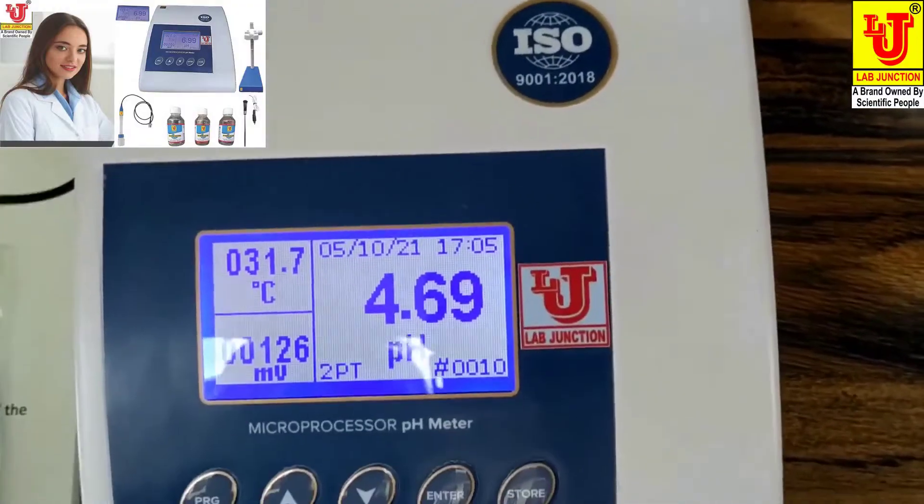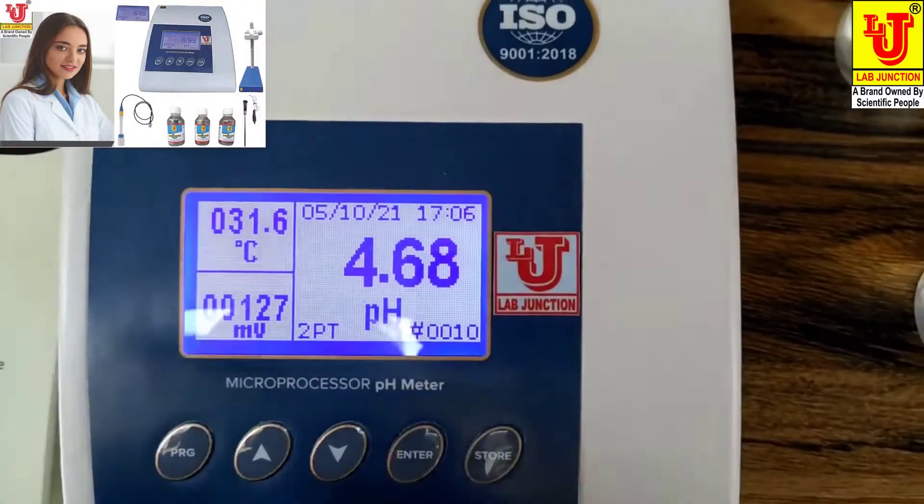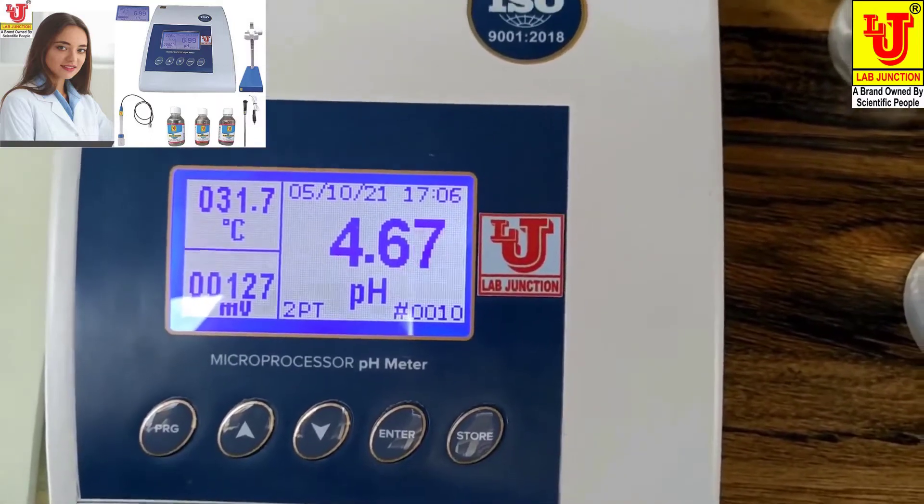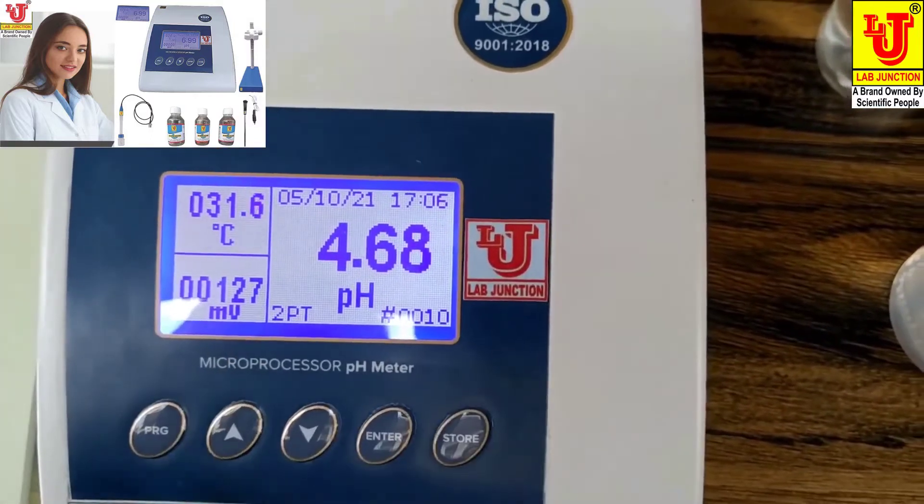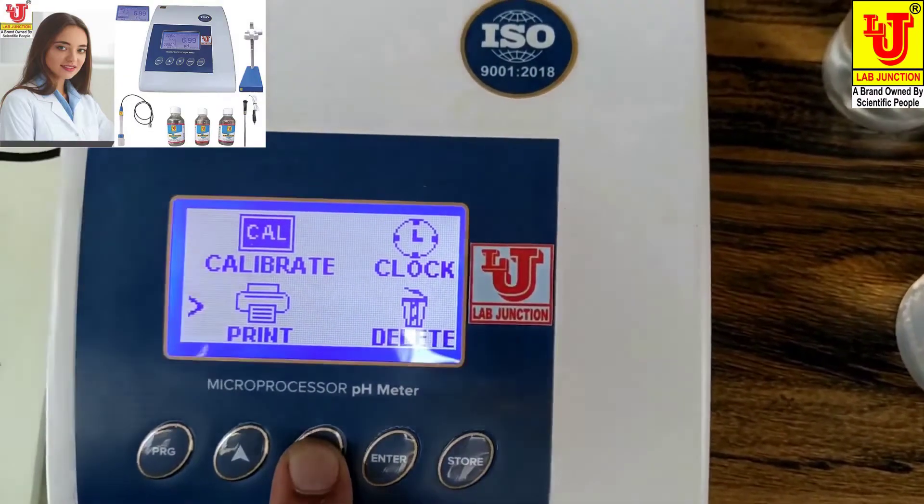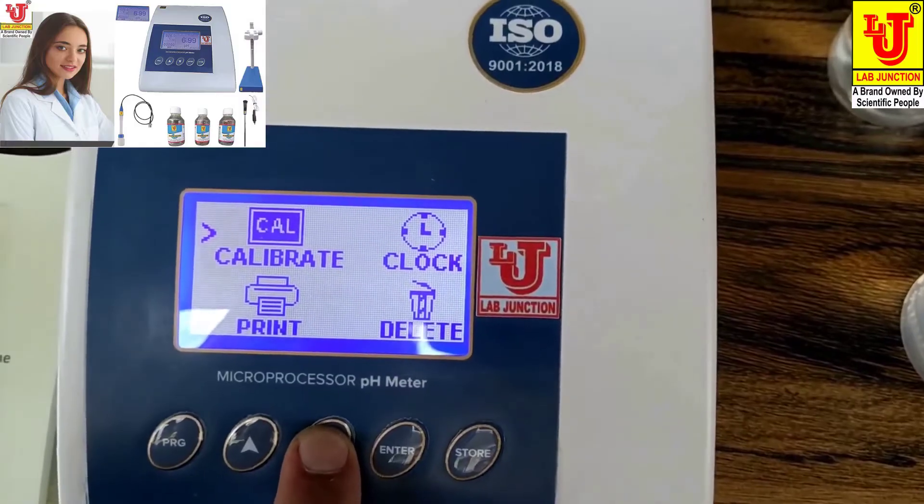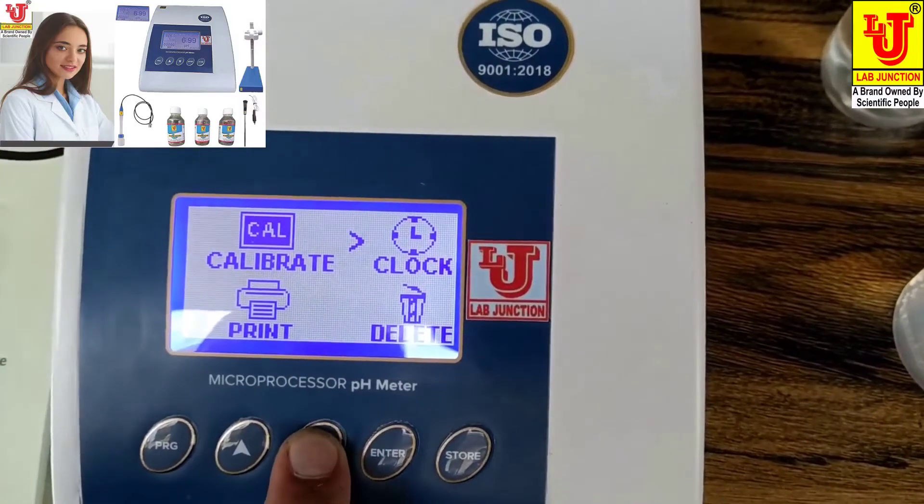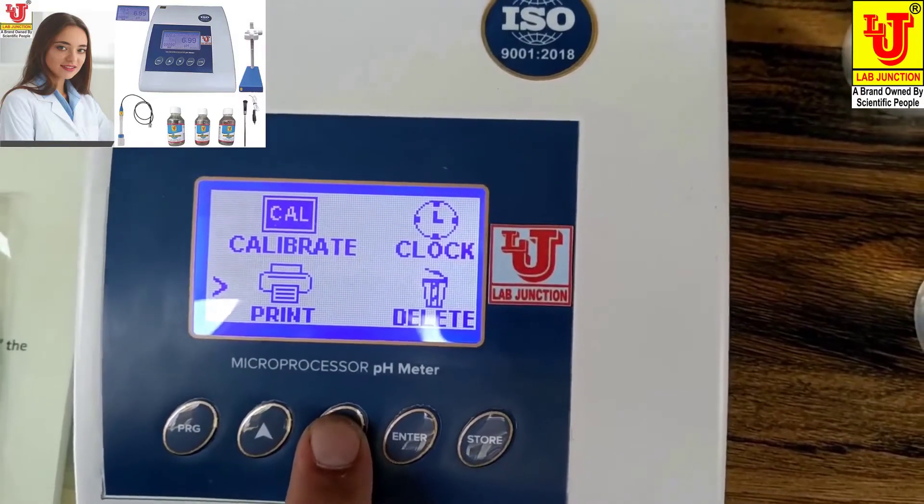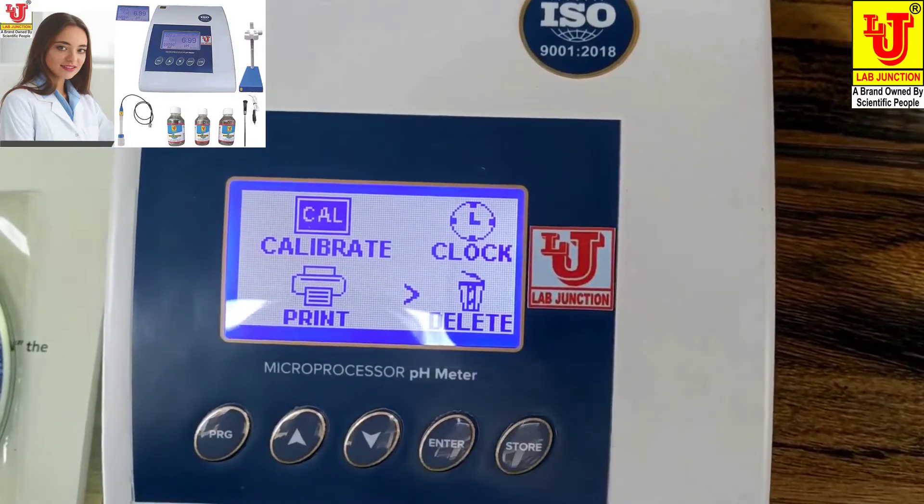Now first, this is the main display. How we can calibrate the pH meter. You can press the program key. This is calibrate, clock, print setting, and this is delete data.